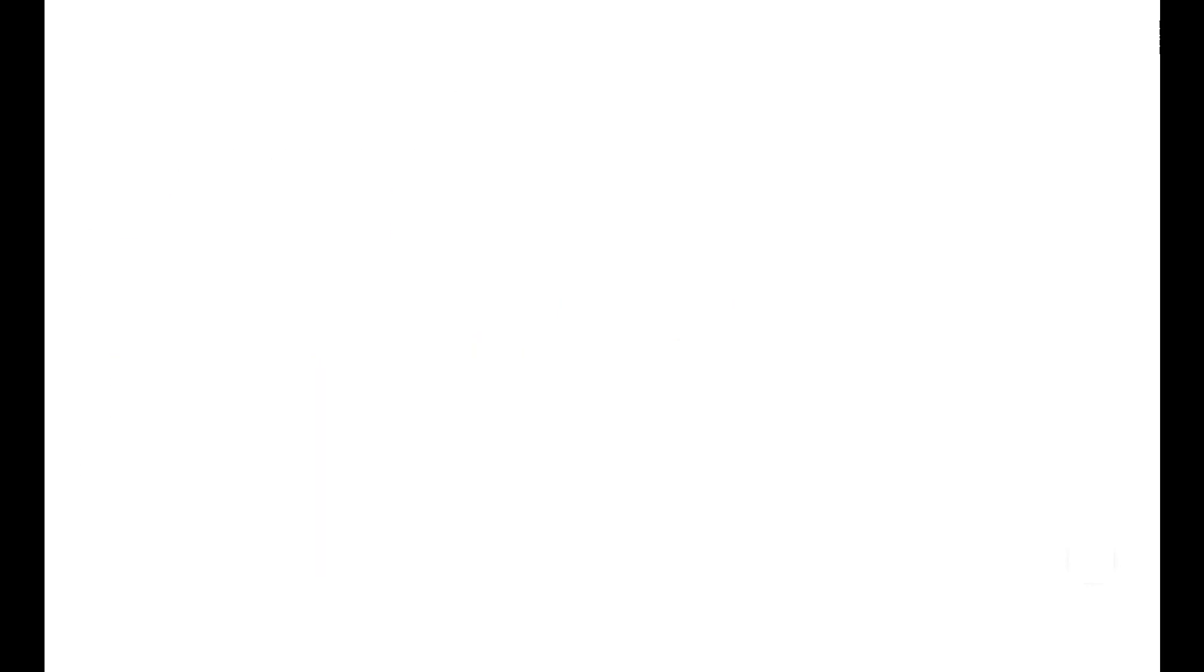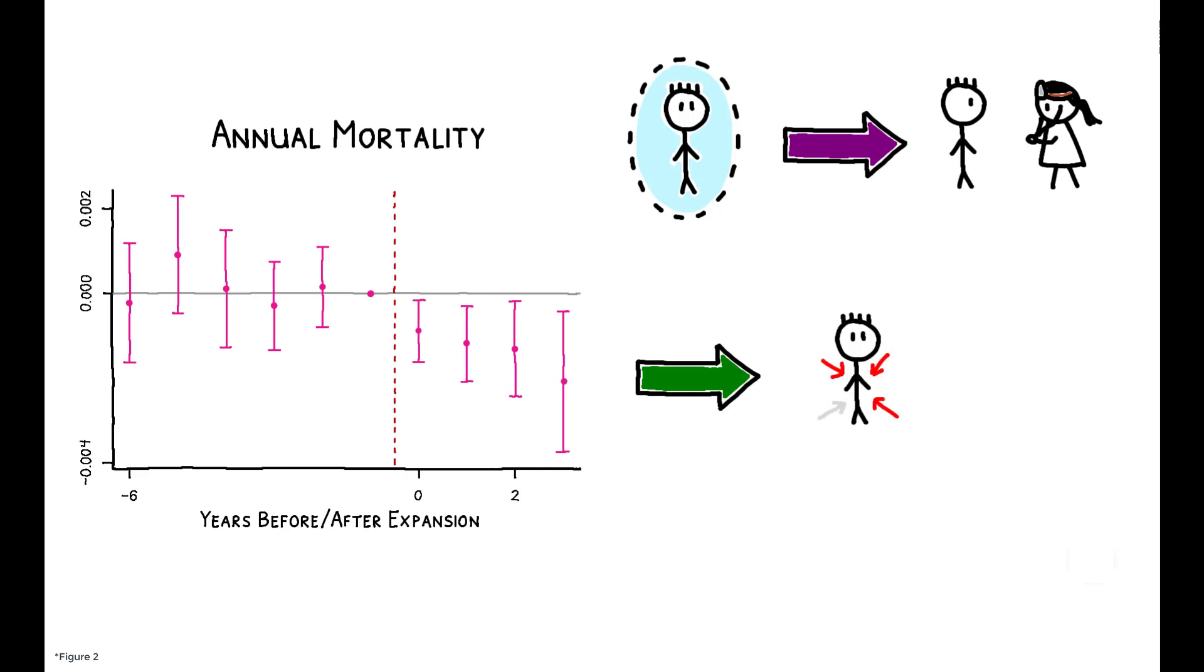Finally, the decline in mortality in the primary sample appears to be driven by conditions that are plausibly affected by insurance coverage. Previous research has shown that Medicaid increases healthcare utilization, and the evidence here suggests that after the Medicaid expansion, there is a decline in internal or disease-related causes of death, but no impact on external causes such as car accidents.